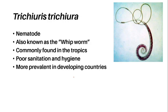Triturus tritura is a nematode, also belonging to our phylum Nematoda. It is also known as the whipworm, and they are commonly found in the tropics, including the Philippines. They are more prevalent in developing countries due to the absence of advanced sanitation techniques and practices.